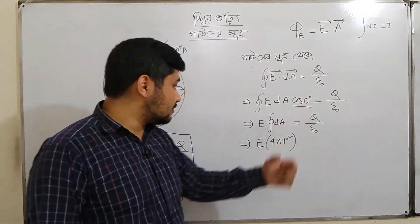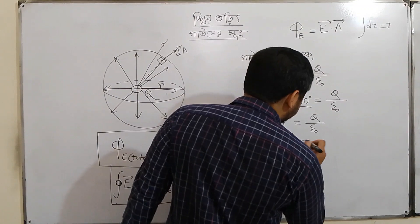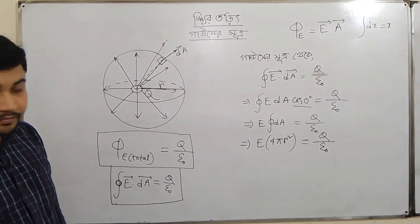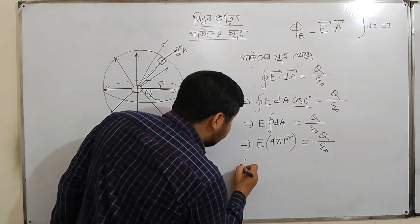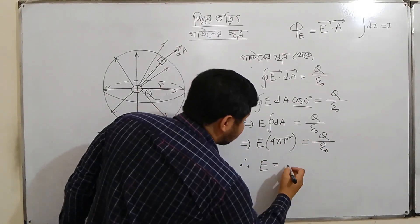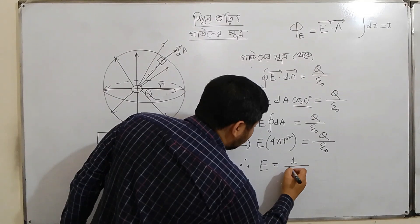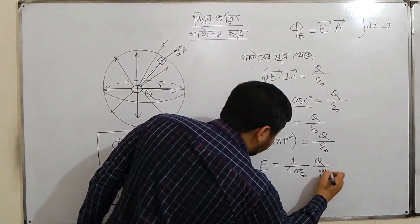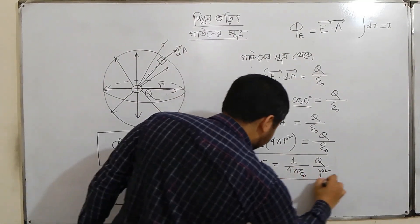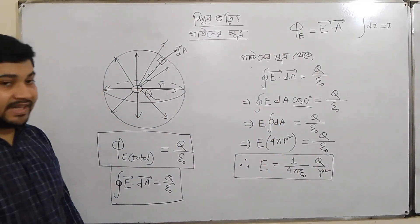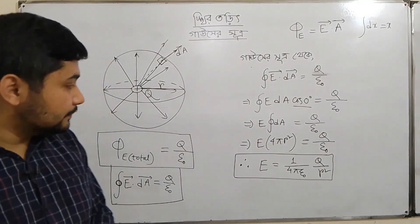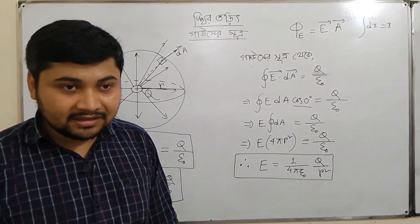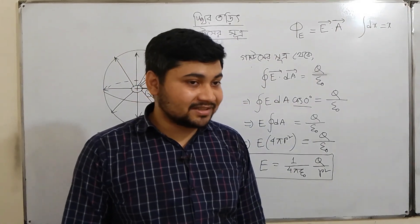4πr² is equal to q by epsilon naught. So E is equal to — 4πr² is rearranged to give: 1 by 4π epsilon naught times q divided by r squared. Therefore E equals 1 by 4π epsilon naught times q divided by r squared. The electric field follows Coulomb's 1 by r squared law.